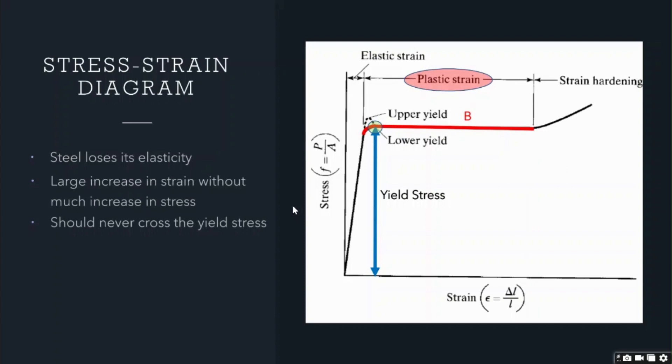Region B can also be used as an advantage to the designer. Let me explain how. In case there is an overloading in the structure beyond its yield stress, as we know, there will be a considerable increase in strain in the structure, but there will be no increase in stress. Thanks to this structural behavior of steel, it will not fail prematurely as there is no increase in stress in the structure.